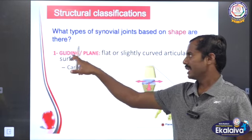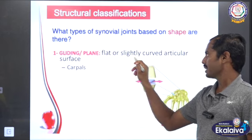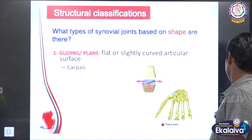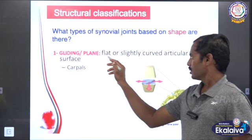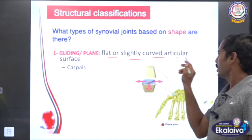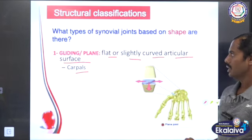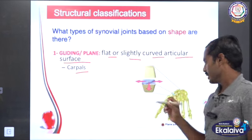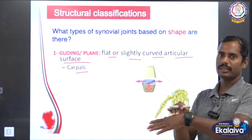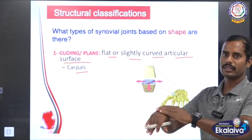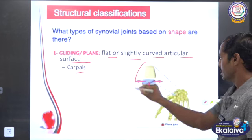Number one: gliding or plane joint. The articular surfaces are flat or slightly curved. Example: carpal bones. The gliding joint allows movement — we are going to bend the thumb finger at the joints. This is the gliding or plane joint.